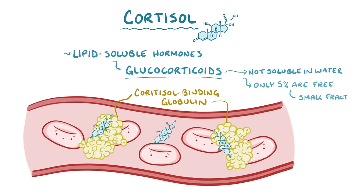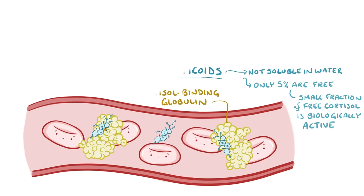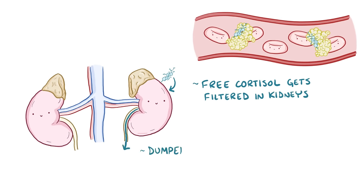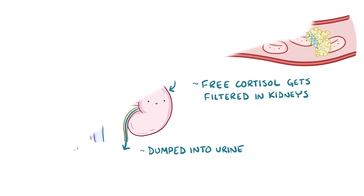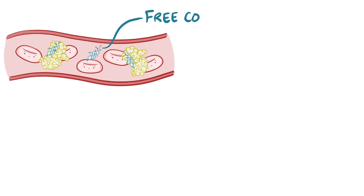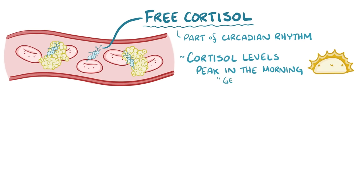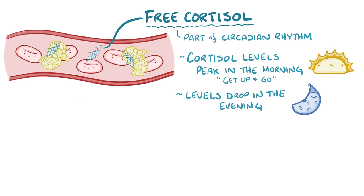Only this small fraction of free cortisol is biologically active, and its levels are carefully controlled. Excess free cortisol is filtered in the kidneys and dumped into the urine. Free cortisol in the blood is part of the circadian rhythm—cortisol levels peak in the morning when the body needs to get up and go, and then drop at night when we're getting ready for bed.